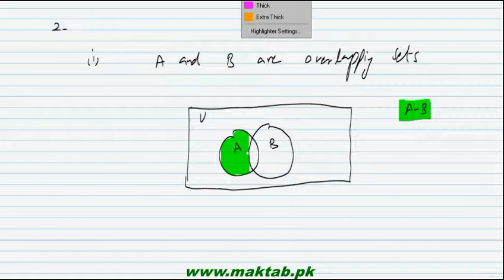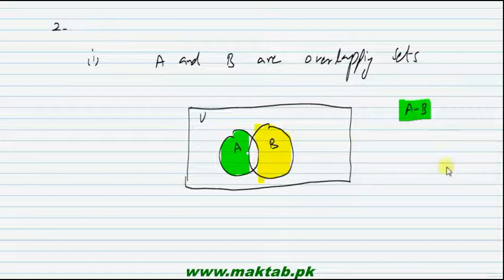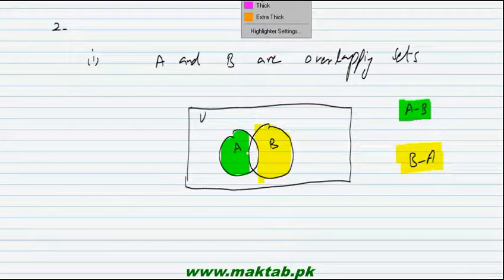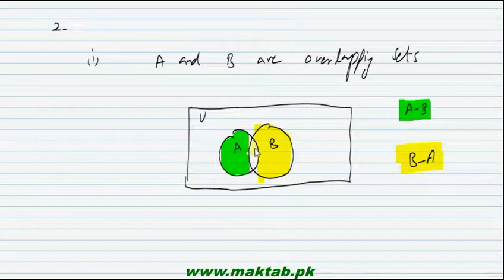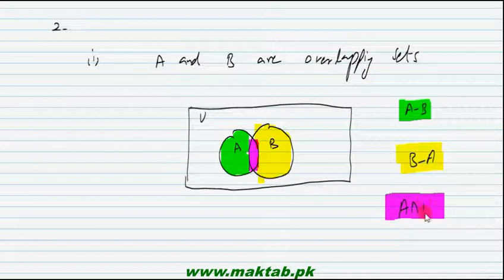After that, we also find B minus A. I will use a different color. From B we remove A — the part of A that is common with B is removed, and the remaining area inside B becomes B minus A: the region in B but not in A. This is shown in yellow. And for intersection — the region common to both, shown in pink — that is the intersection region where both overlap.